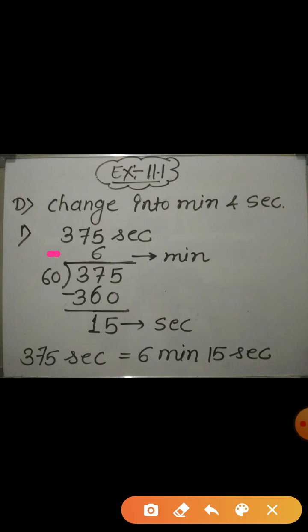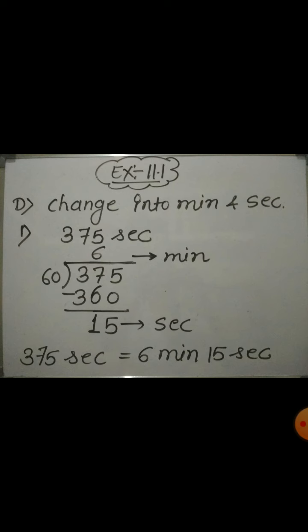Now, in the first example, the time is given 375 seconds. To convert the number of seconds into minutes, here you can see I have divided 375 by 60.